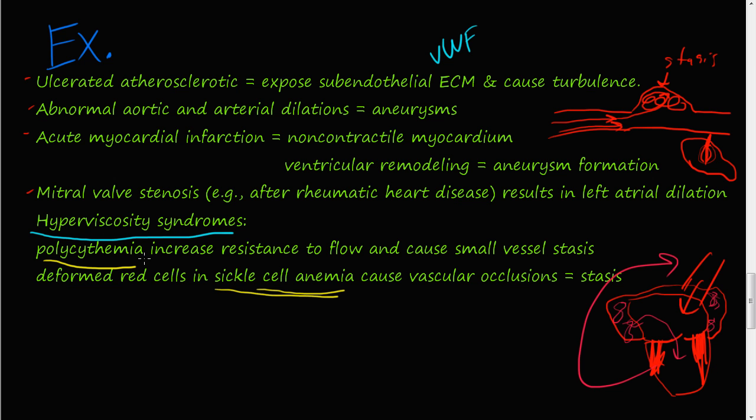So the last but not least is these hyperviscosity syndromes. As polycythemia increases the resistance to flow and can cause small blood vessels stasis. So as the blood is coming down the vessel, there's little offshoots, if you will. And this blood coming down can come into this smaller blood vessel and get lodged right there. You can come down and start lodging, and that can cause stasis, which is highly prone to blood clots.